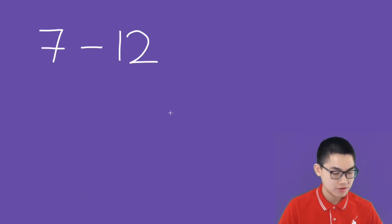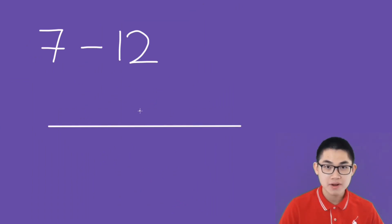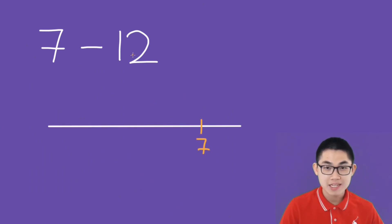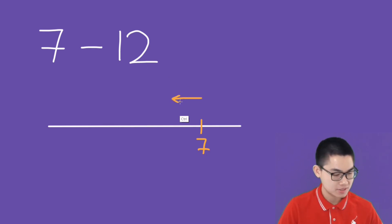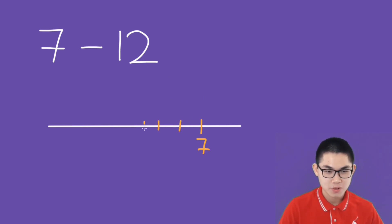How about 7 minus 12? We draw a number line and we start at 7. Since we minus 12, we are moving this way 12 times: 1, 2, 3, 4, 5, 6, 7, 8, 9, 10, 11, and 12.